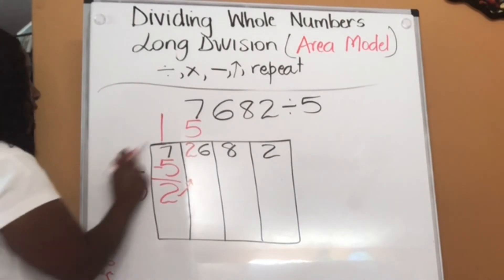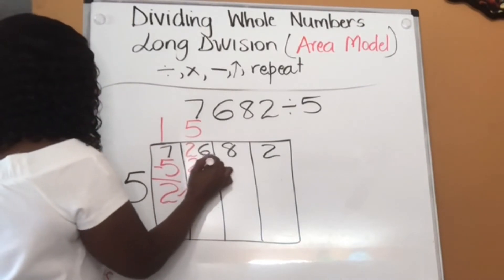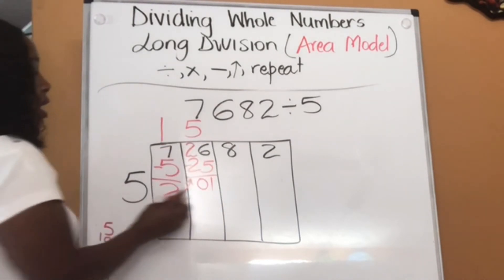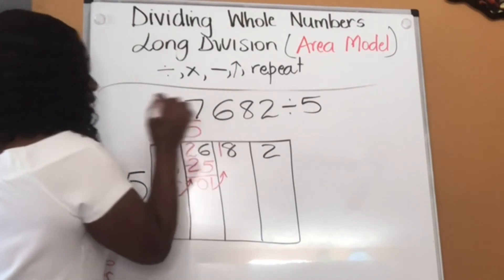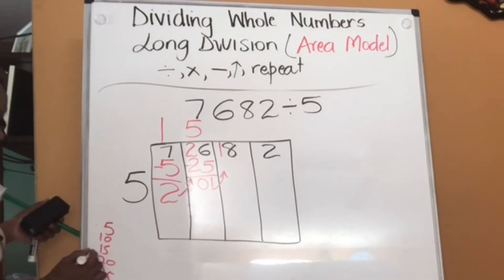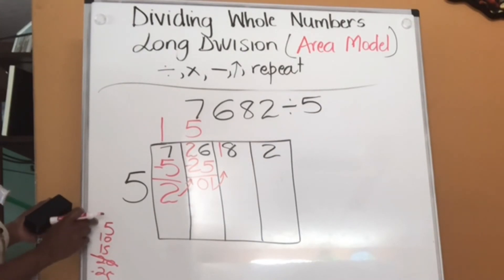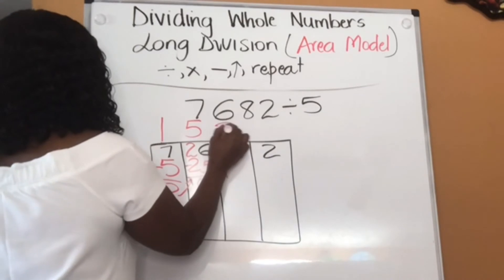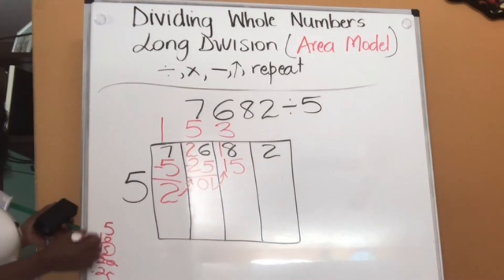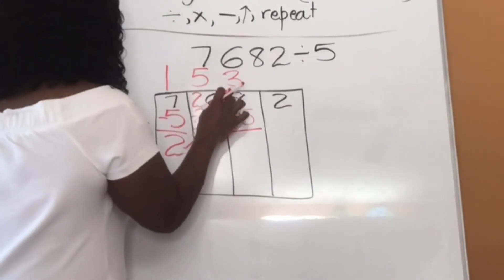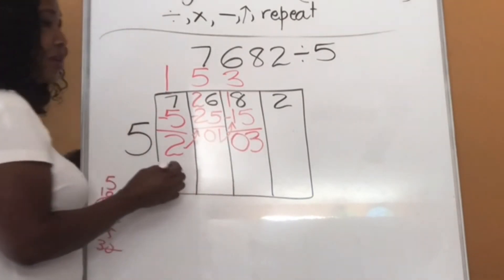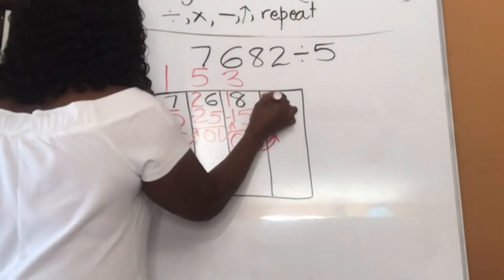Then I'm going to multiply this 5 by the 5 I just wrote: 5 times 5 is 25. Subtract: I'm giving away 5, I'm left with 1. I have 2, I'm giving away 2, I'm left with 0. Now I have to take this 1 across — that becomes 18. How many sets of 5 can I get from 18? 20 was too far, so I have to use 15. That's 1, 2, 3 sets, so I put 3 up there. Multiply: 5 times 3 is 15. Subtract: I have 8, I give away 5, I'm left with 3. I have 1, I give away 1, I'm left with 0. Now it's time to bring across that 3, so that's 32.